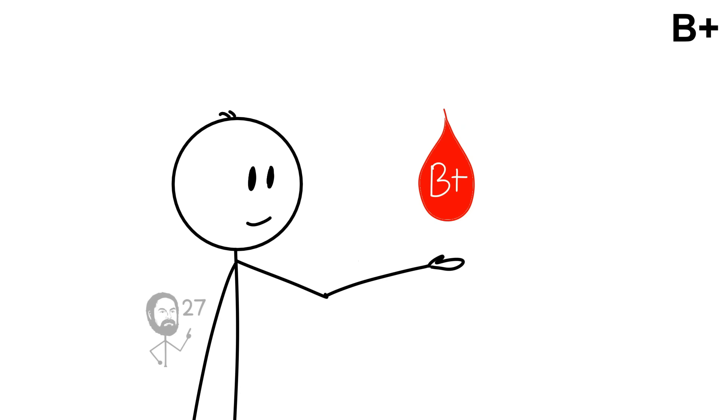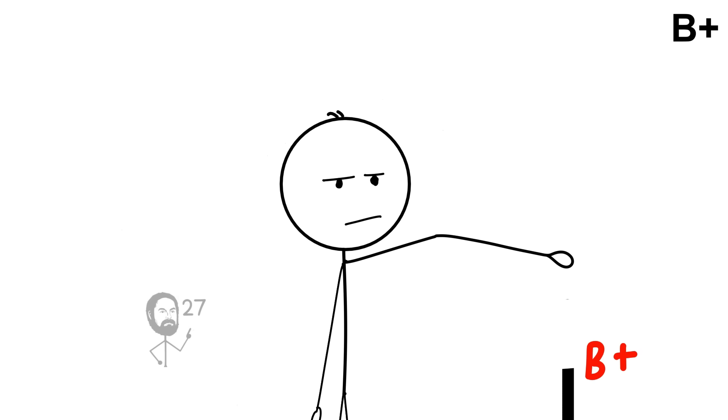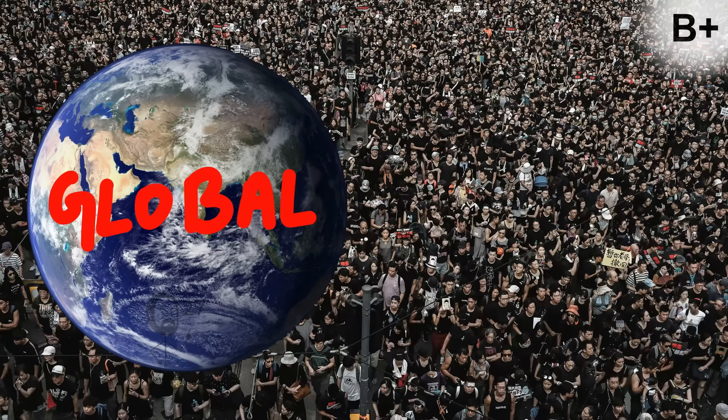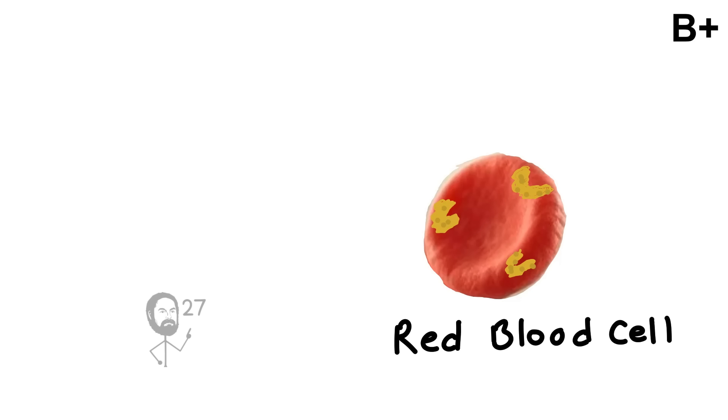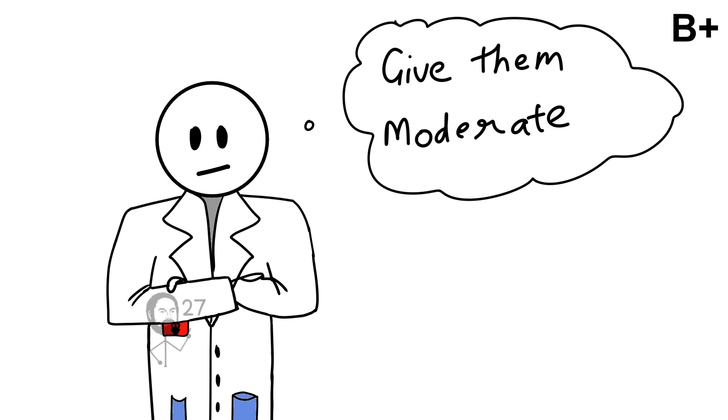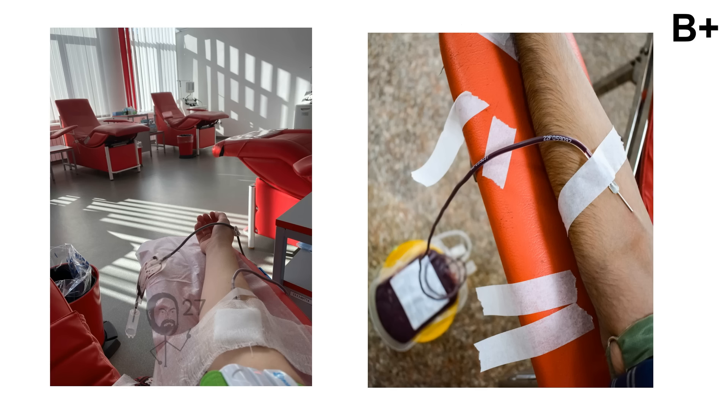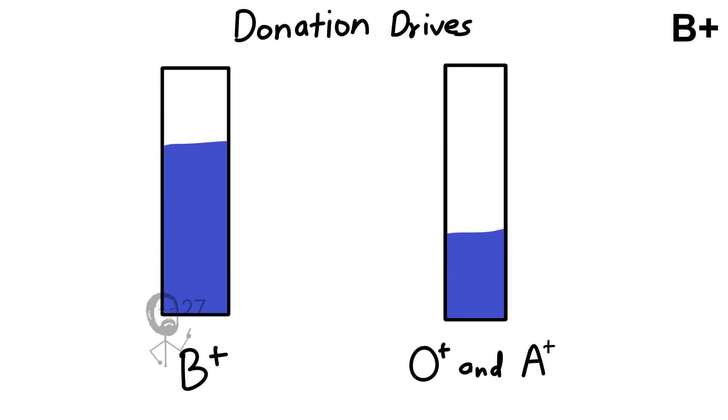B-positive blood is carried by about 1 in 10 people, making it less common than both O and A types, but still significant in the global population. It is defined by the presence of B antigens on red blood cells along with the RHD factor. In transfusions, B-positive individuals can safely receive blood from B-positive, B-negative, O-positive, and O-negative donors, giving them a moderate range of compatibility. Because of its lower frequency, however, maintaining adequate supplies of B-positive blood requires more targeted donation drives compared to O and A types.